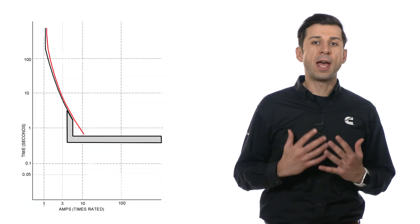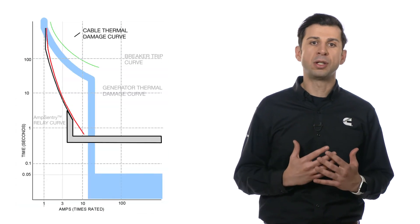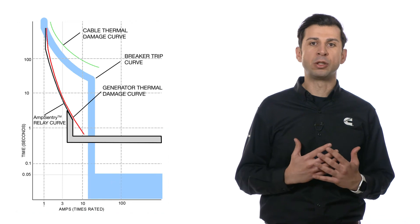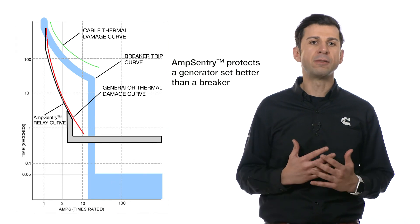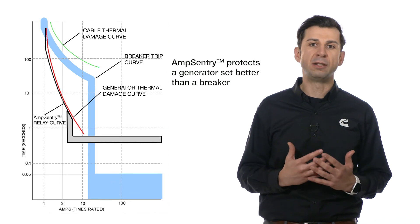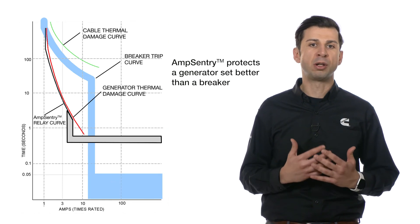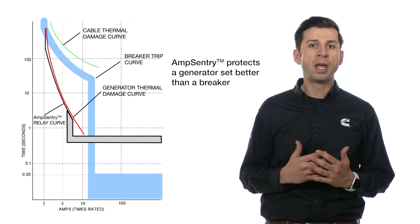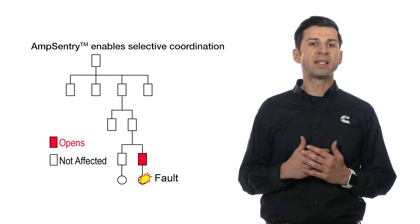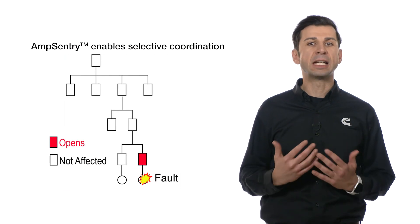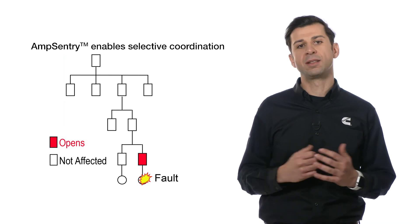Therefore, Amp Sentry protection in power command controls effectively eliminates the need for a main generator set breaker and enables systems to be selectively coordinated. The power command control also has a unique protection element called maintenance mode.